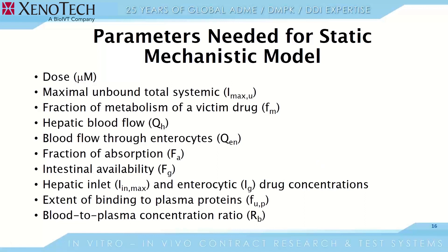The parameters needed for the static mechanistic model are much more involved than for the basic model, which only requires I-max-u and Ki. Here, many more parameters are needed: the fraction of metabolism of a victim drug, hepatic blood flow, blood flow through enterocytes, fraction of absorption, and more. Some parameters can be experimentally derived, such as plasma protein binding and blood-to-plasma concentration ratio. Others, such as enterocytic or hepatic blood flow values, can be taken from literature or guidance documents. When fraction of absorption is unknown, we assume 100% absorption and set the FA value to 1.